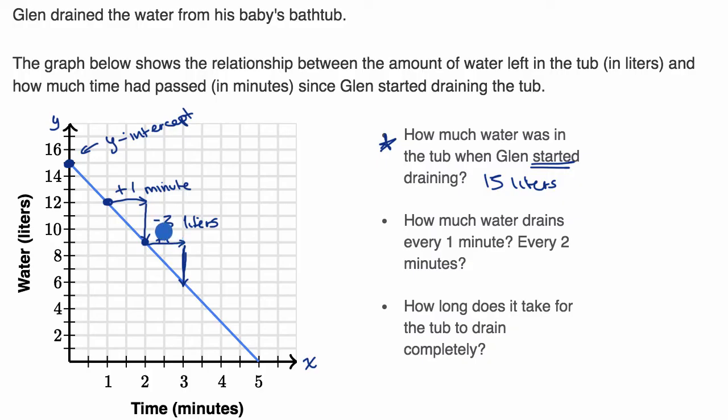So it looks like the tub is draining three liters per minute. So draining, draining three liters per minute. And so if they say every two minutes, well if you're doing three liters per every one minute, then you're going to do twice as much every two minutes. So six liters every two minutes.